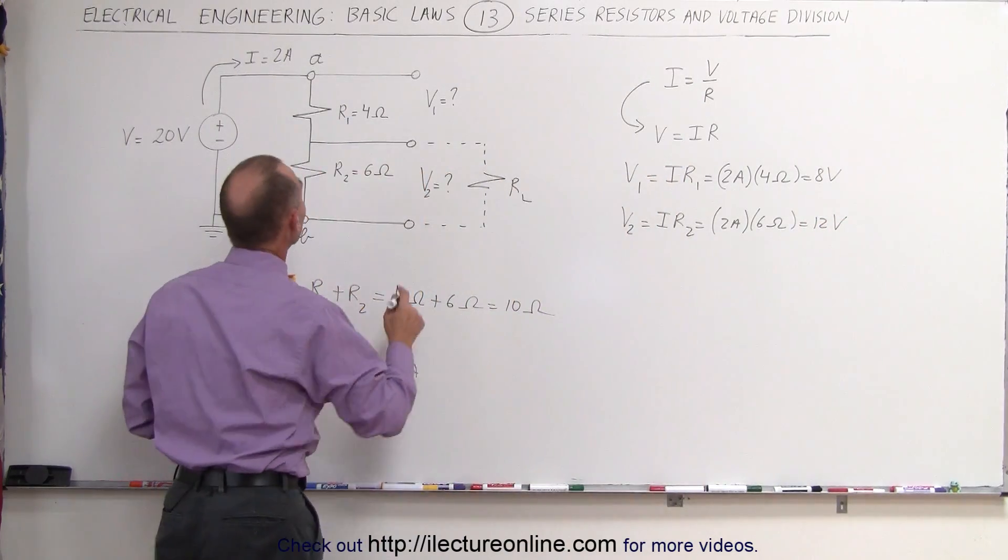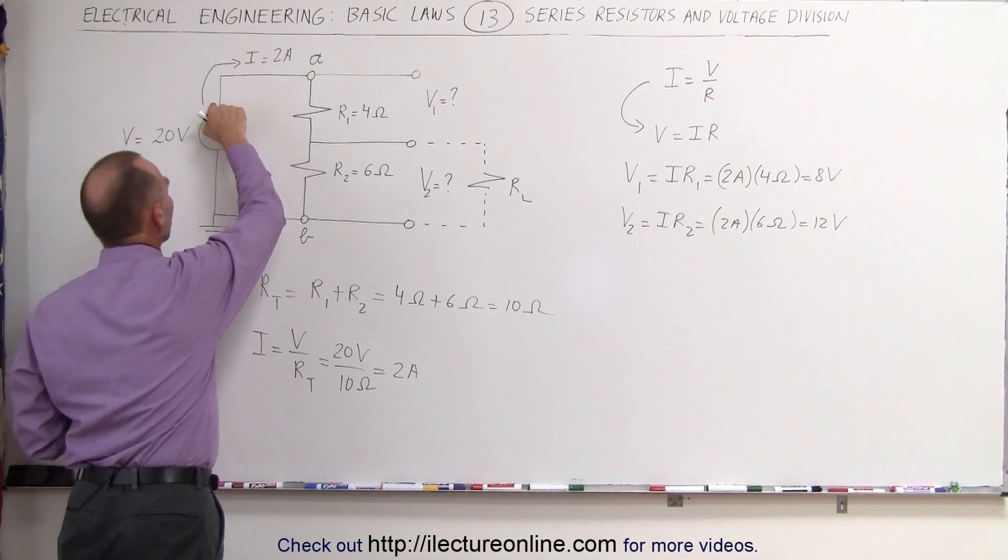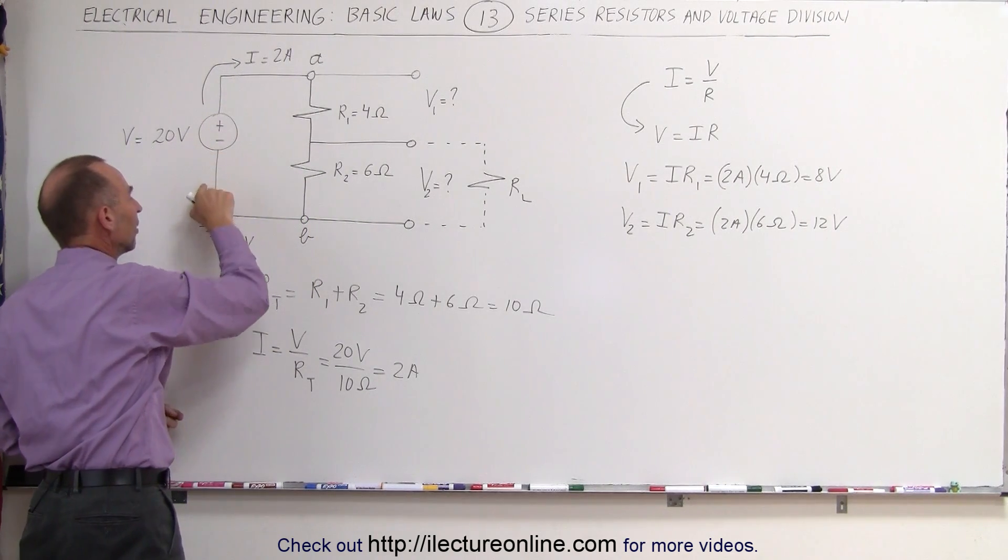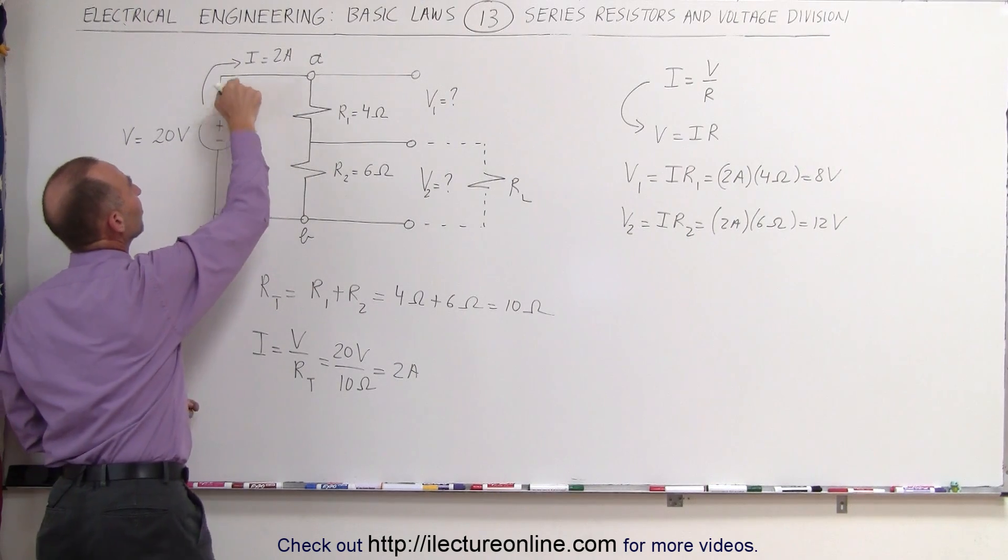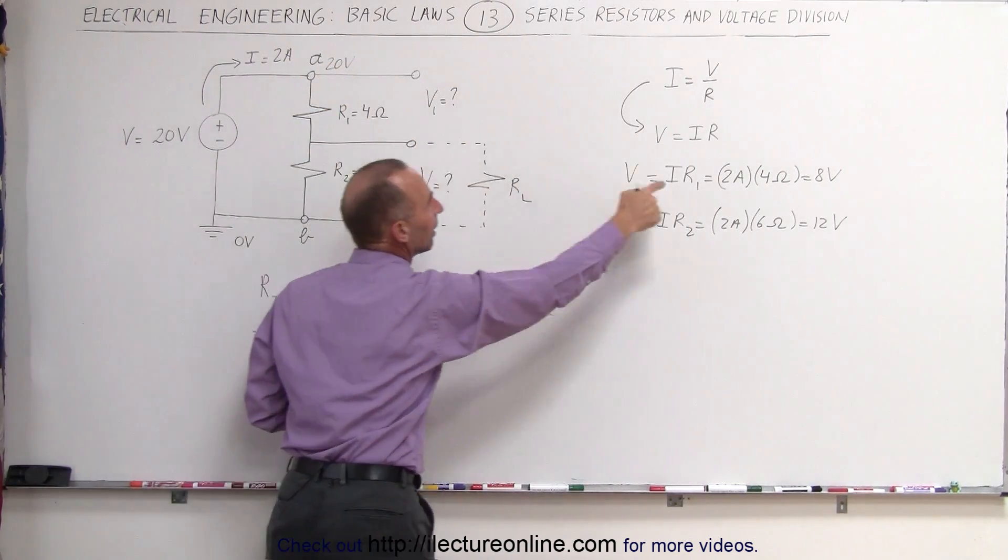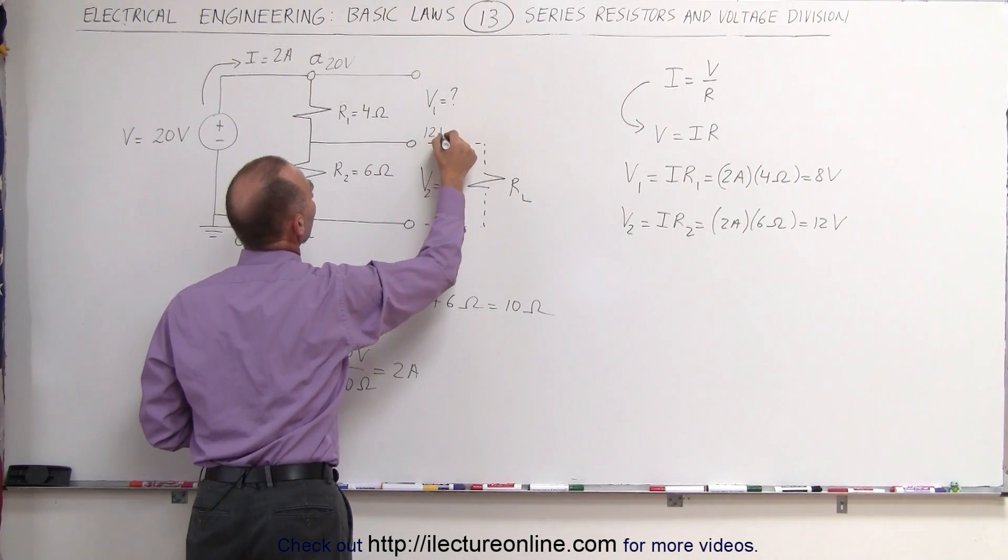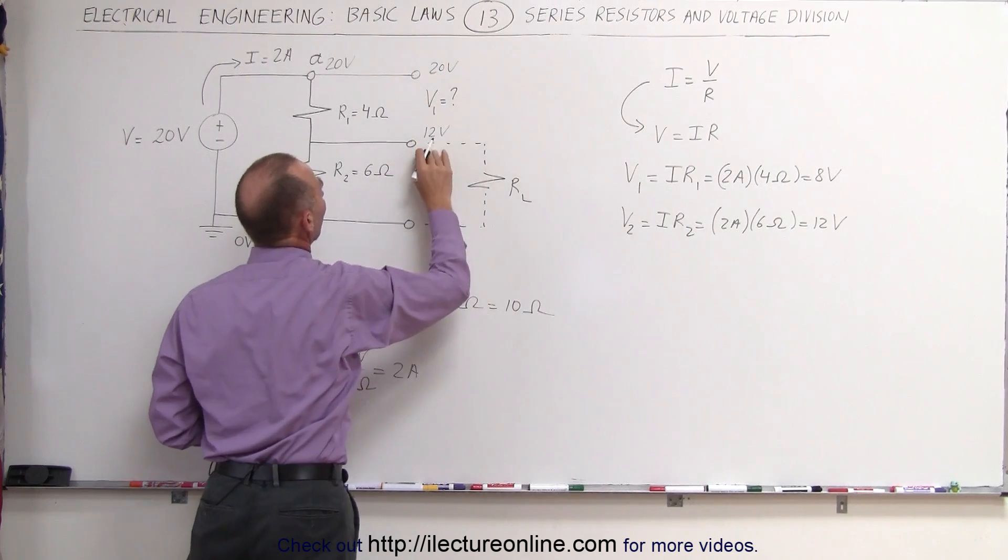Which means, since A must be at 20 volts because this end of the voltage source is 20 volts higher than this end which is at 0 volts, that makes this at 20 volts. Then we have V1, an 8 volt drop. 20 volts minus 8 puts this at 12 volts. So this is at 20 volts, this is at 12 volts.